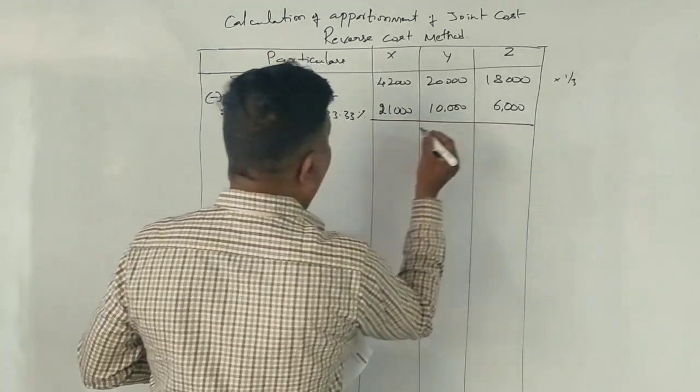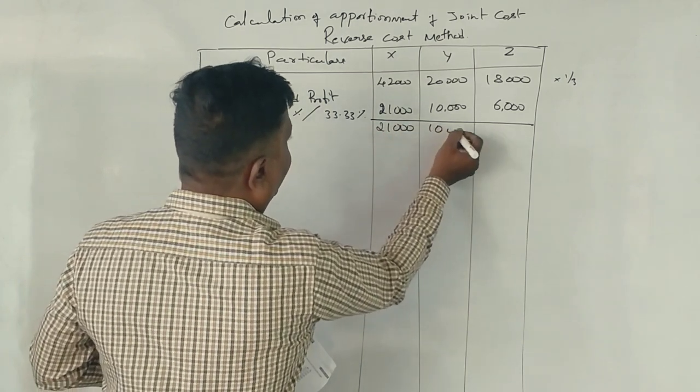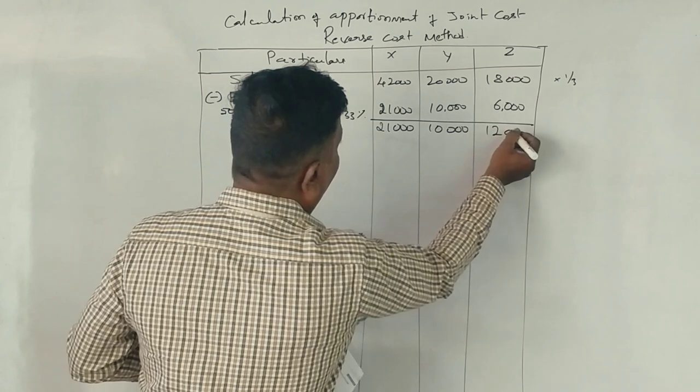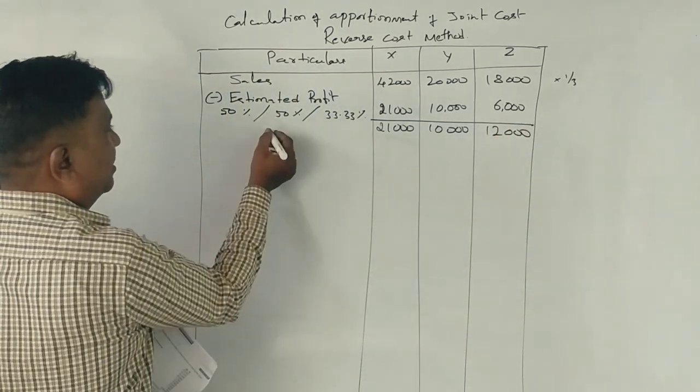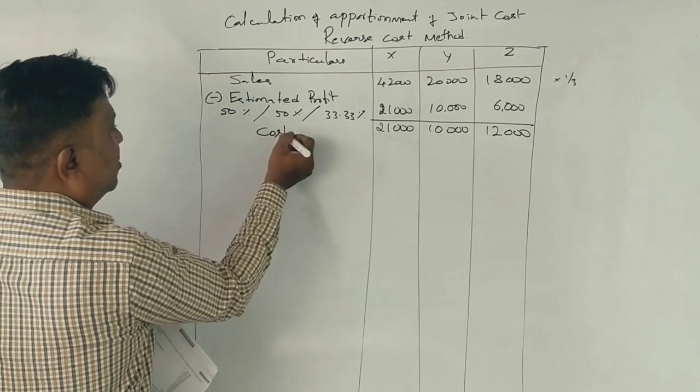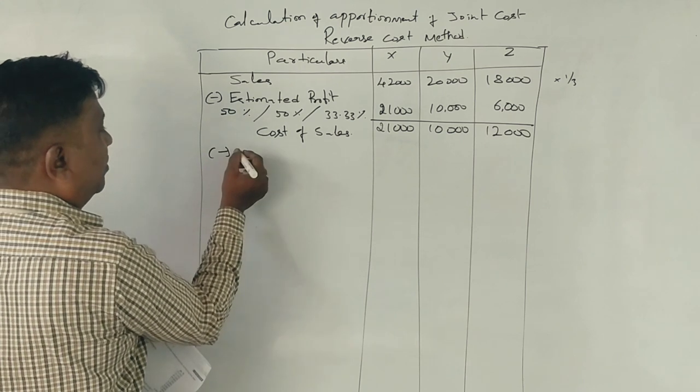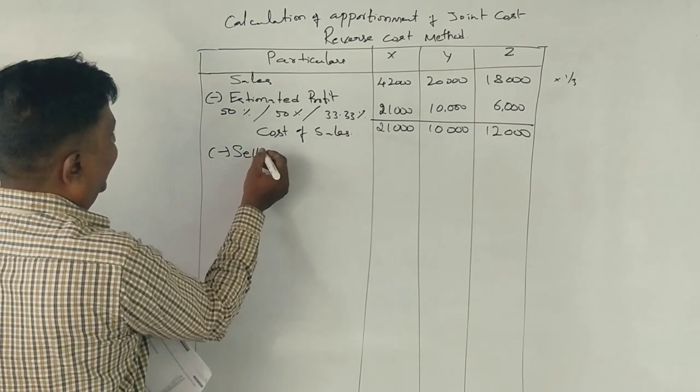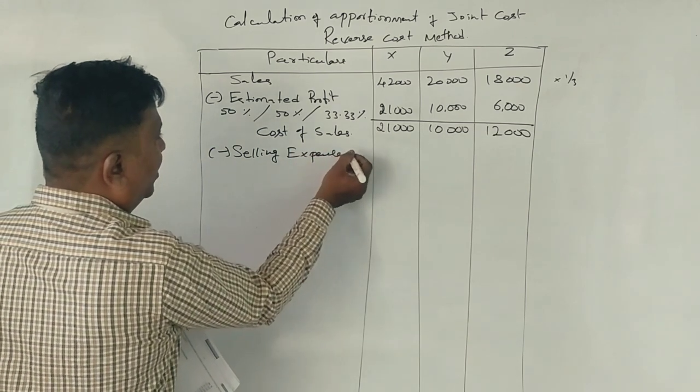This is minus 21,000, 10,000, and 12,000. What is this? This is called cost of sales. This is the selling expense.